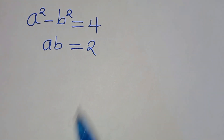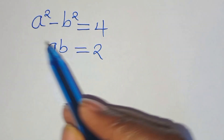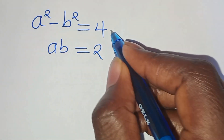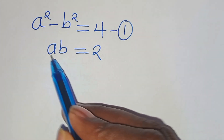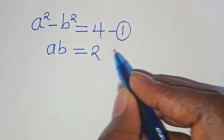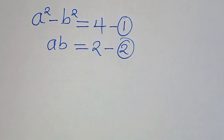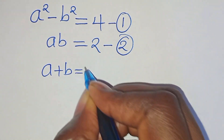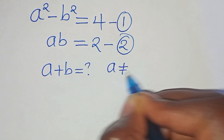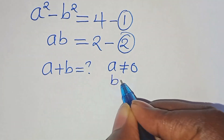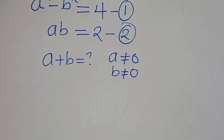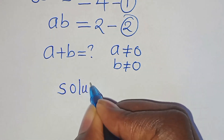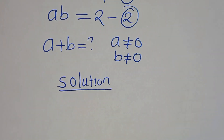Hello everyone, welcome to this algebra problem. We have a squared minus b squared equals 4 — let's call this equation 1. And a times b equals 2 — let's call this equation 2. We want to find the value of a plus b, given that a is not equal to 0 and b is not equal to 0.